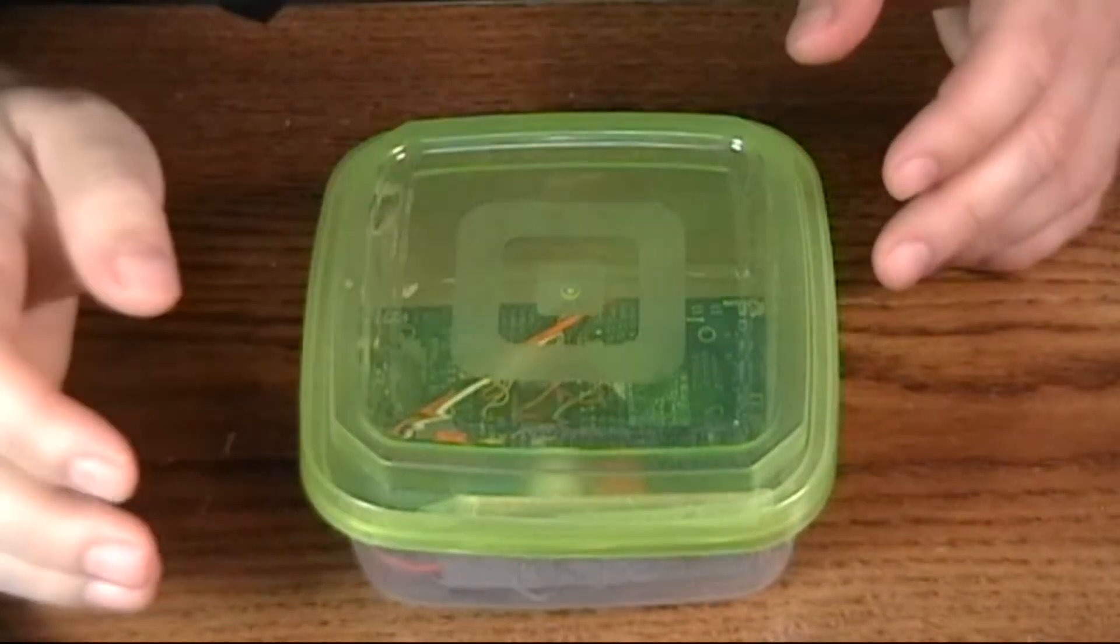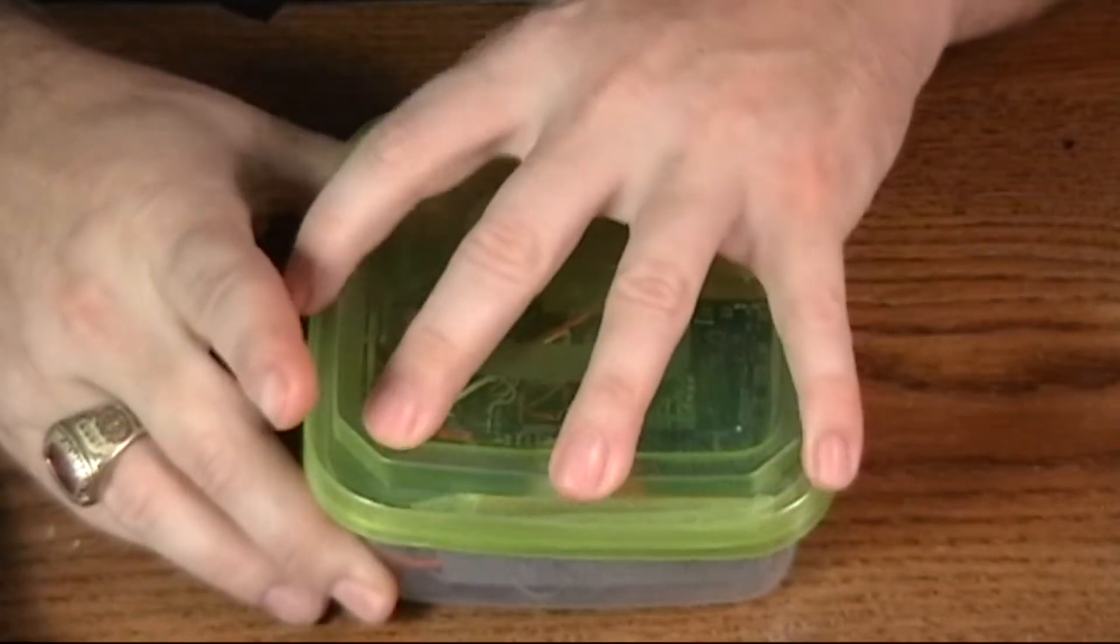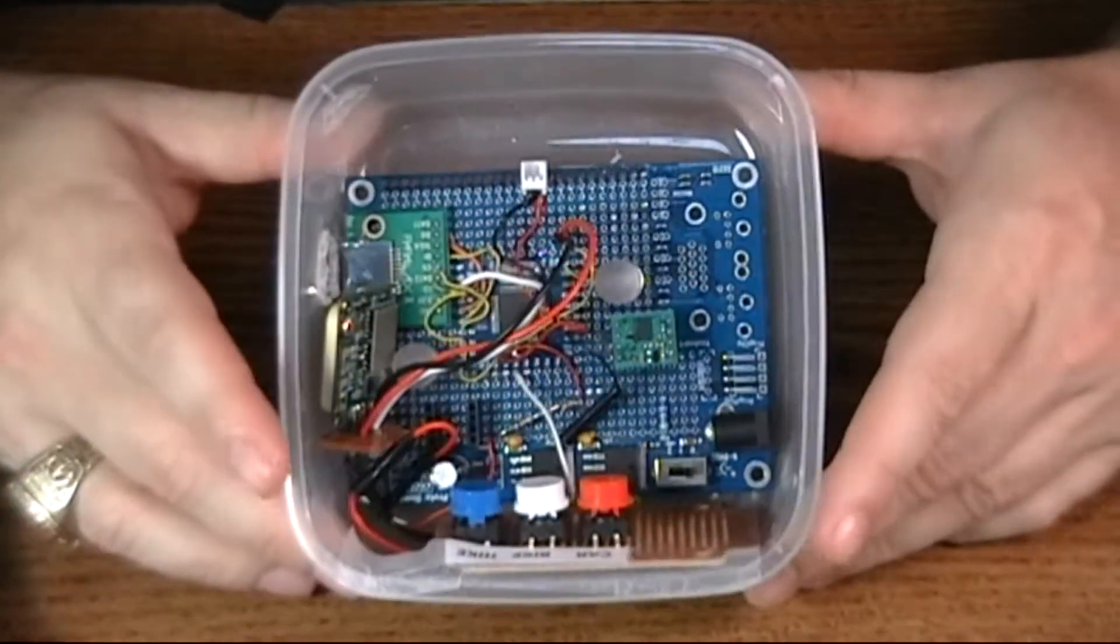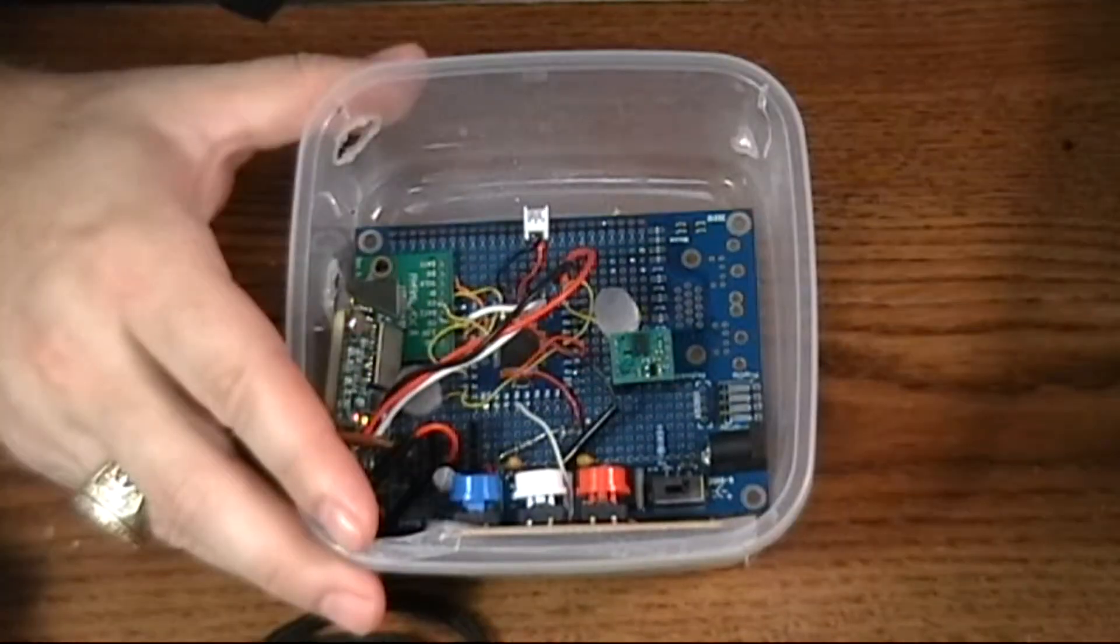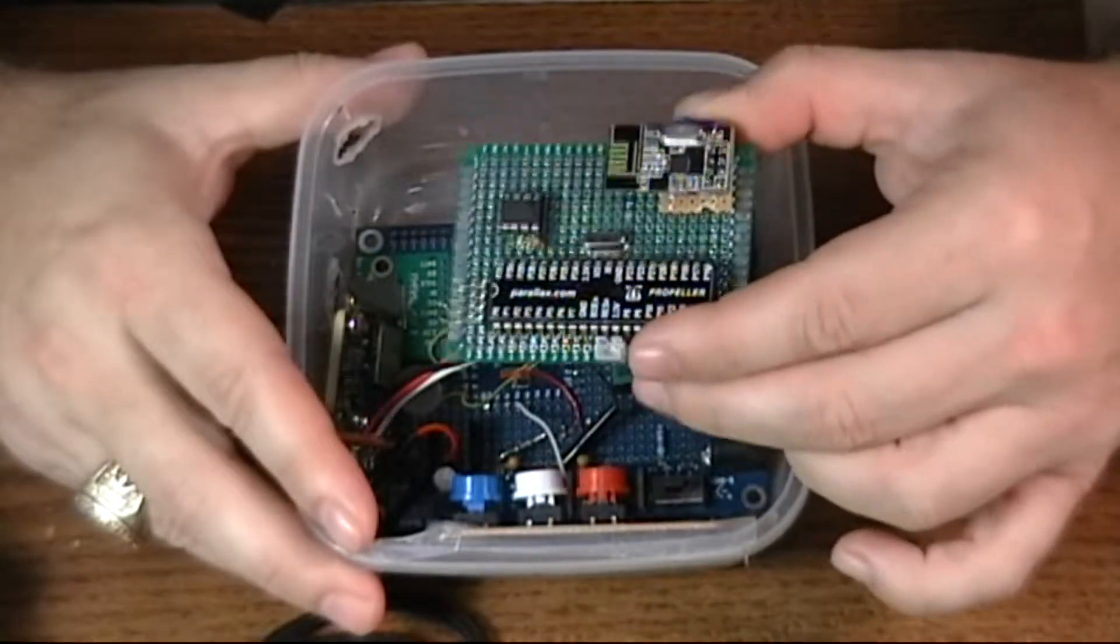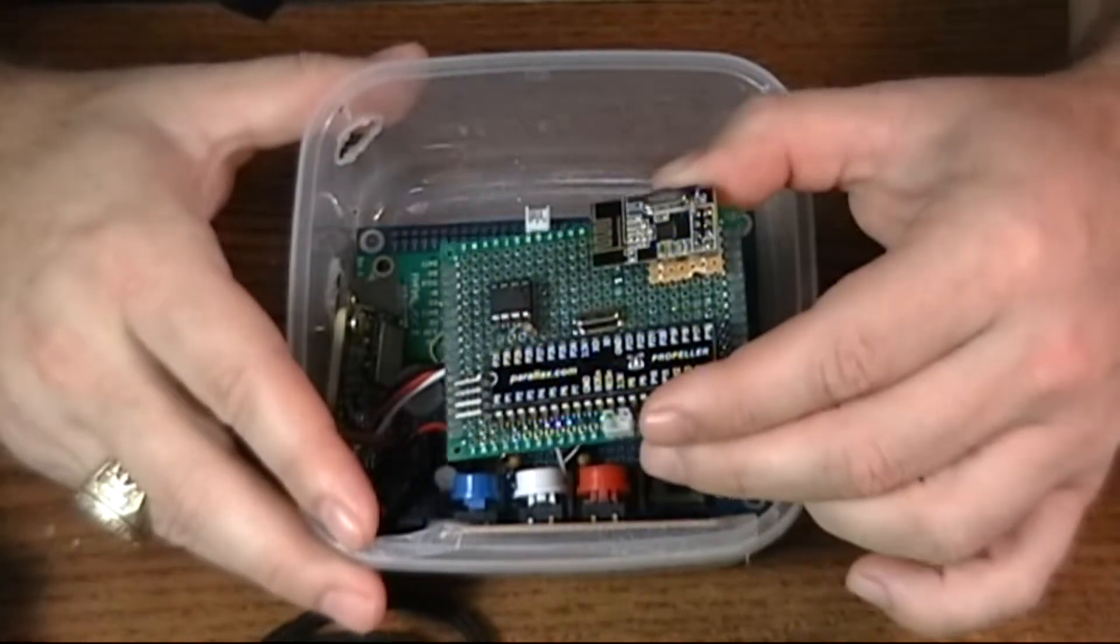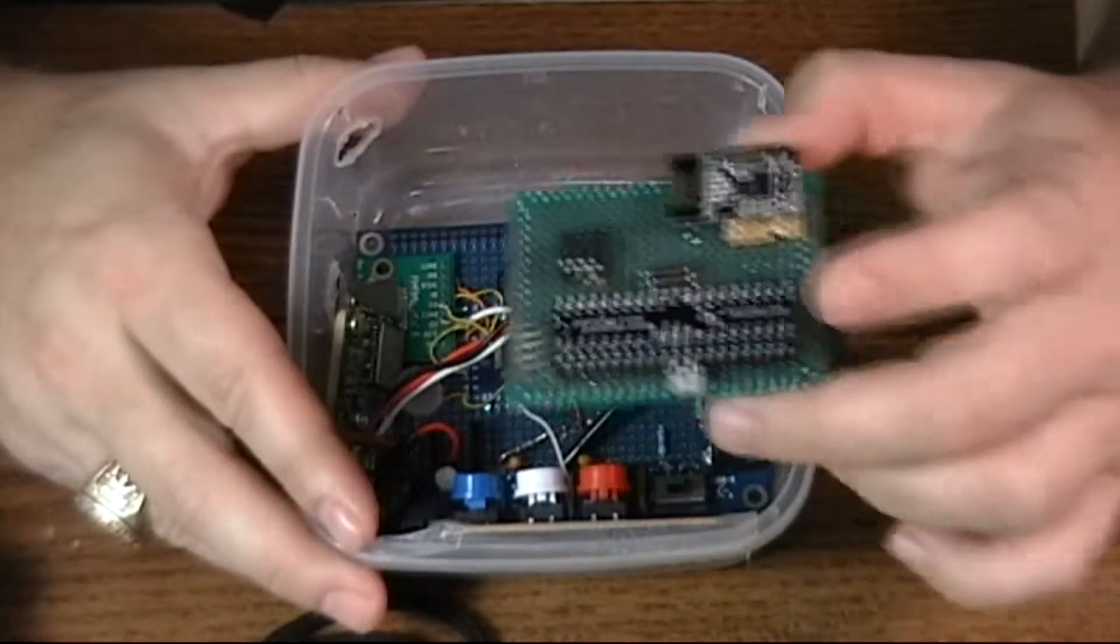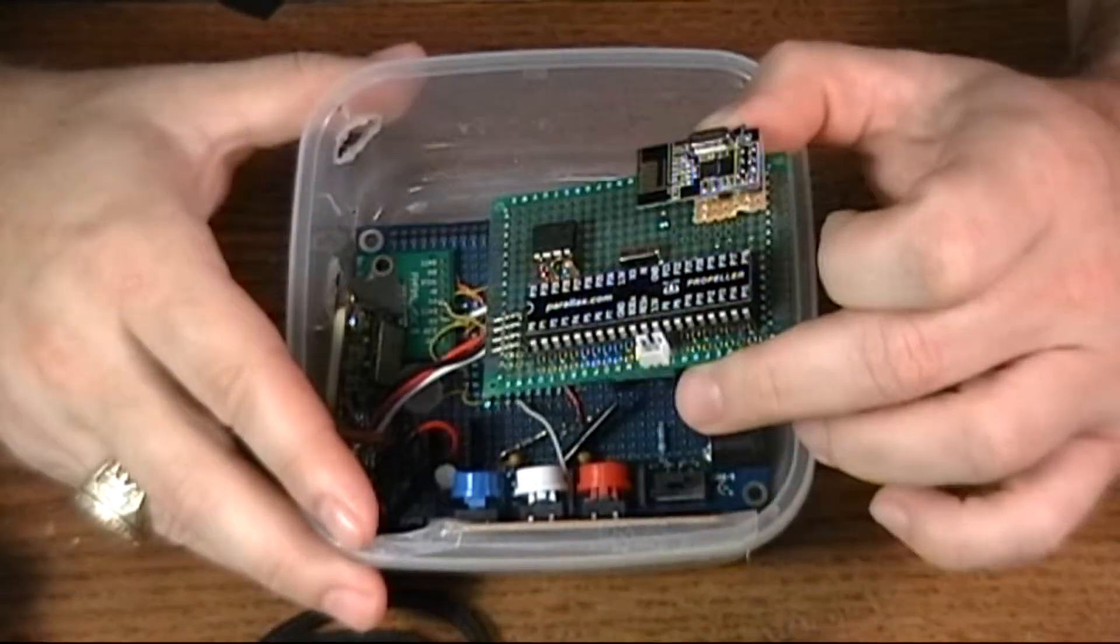I currently have the data logger on a Parallax protoboard Propeller protoboard, which is a great board but it's too big for the case. I had originally intended to use one of my homespun Propeller boards for the case, which I'm still going to do, but I'm currently playing musical chairs with all the chips I have.